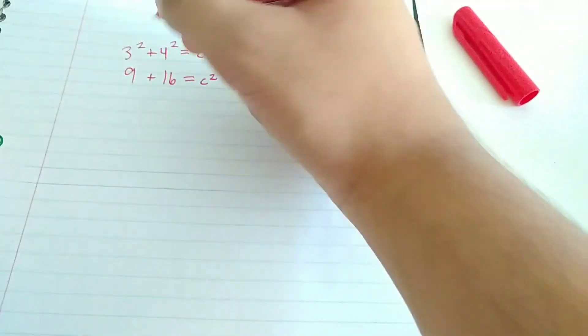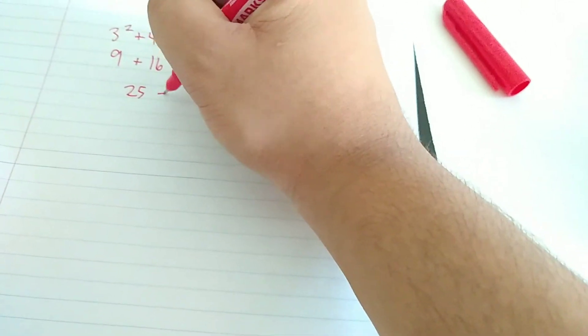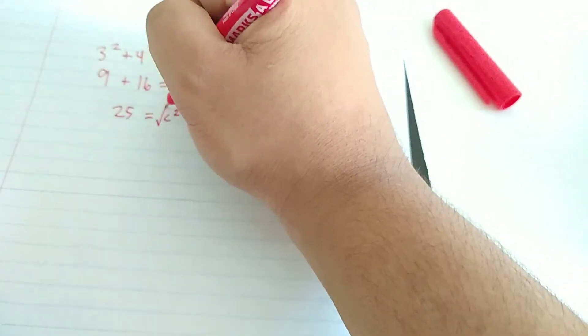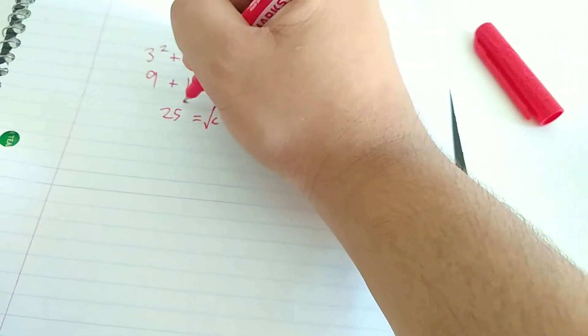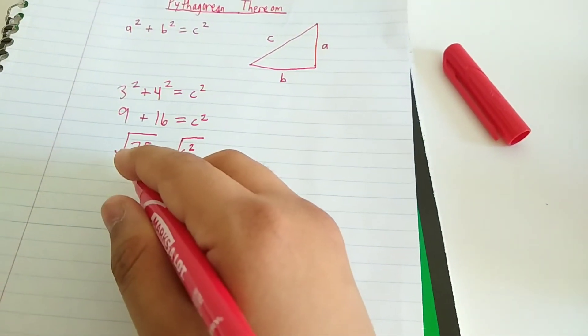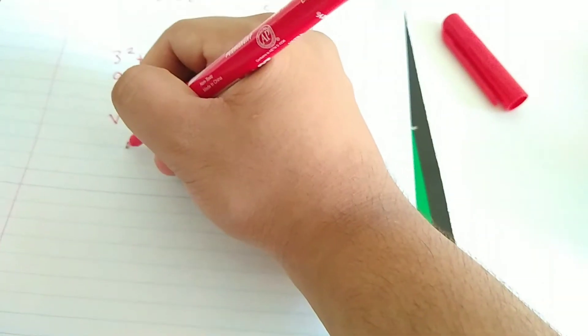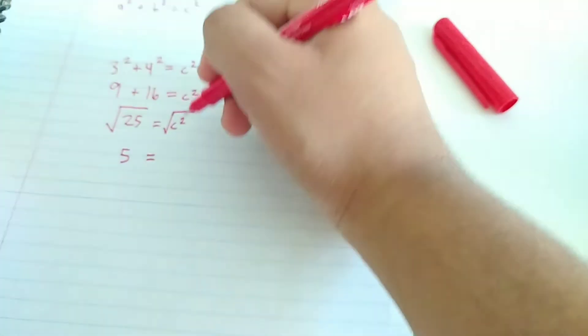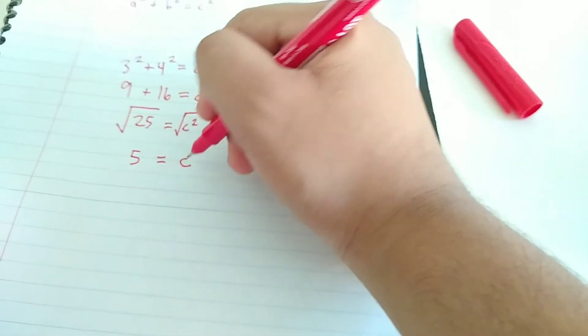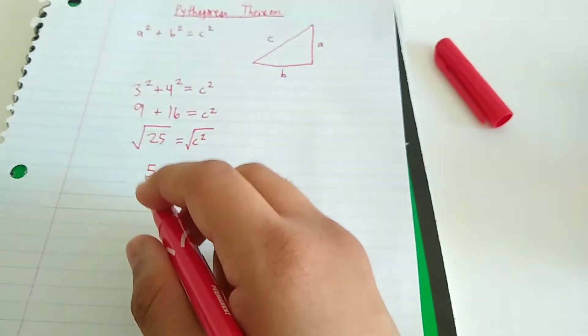If we add these together, you'll get 25 equals c squared. And then we have to root each side. So the root of 25 is 5. And the root of c squared is c. So c equals 5.